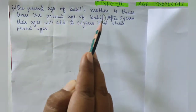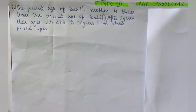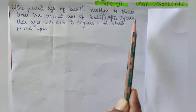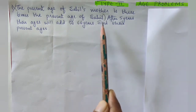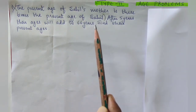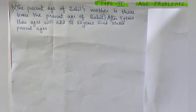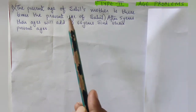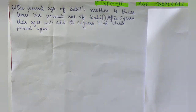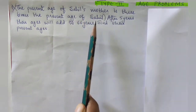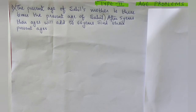Let us understand what is given in the problem. The present age of Sahil's mother is three times the present age of Sahil. For example, if Sahil's age is 10 years, mother's age will be three times that, which is 3 × 10 = 30 years. So to find Sahil's mother's age, we must first find Sahil's age.